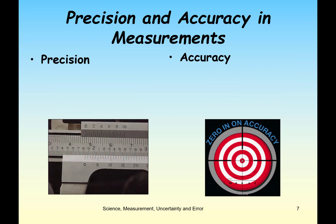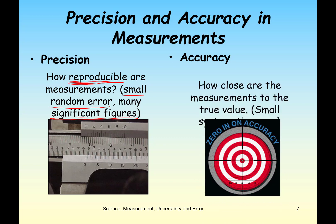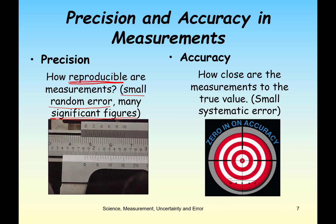We can also talk about precision and accuracy in measurements. Precision is how reproducible measurements are — a precise measurement has small random error and has many significant figures. Significant figures also account for precision. Accuracy tells us how close our measurements are to the true value, so accurate measurements indicate small systematic error.